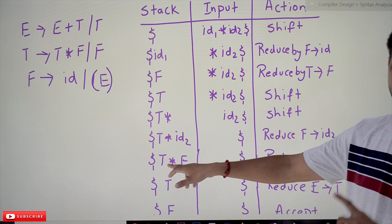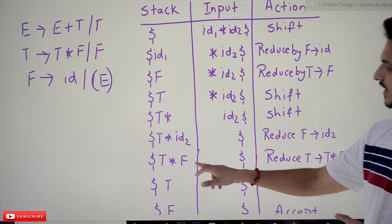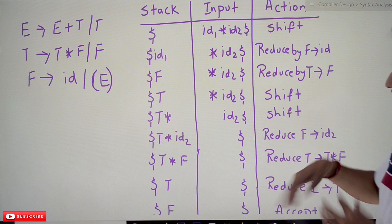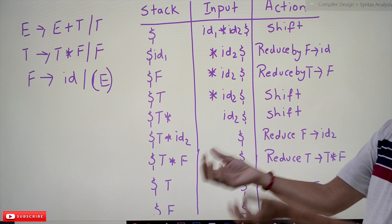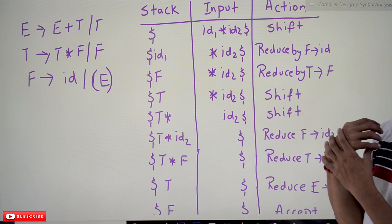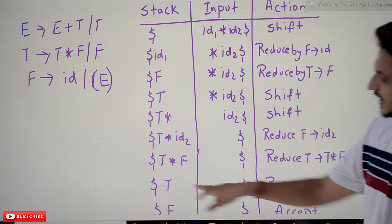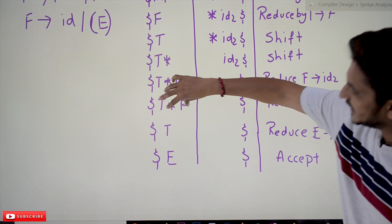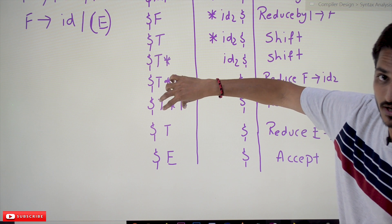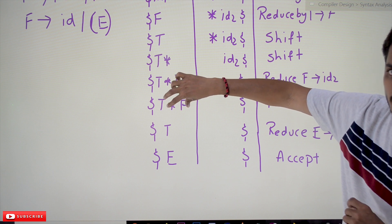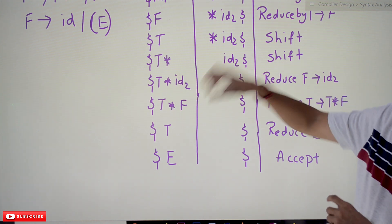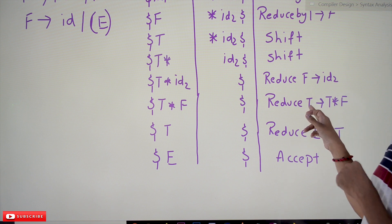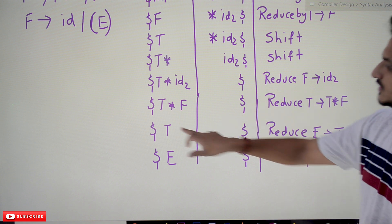Reduce: F → id matches id2, so id2 is reduced to F. Now the stack has T * F. T * F is matched by the production T → T * F, so pop T * F from the stack and push T onto the stack. That is what reduce operation means — the entire handle is matched to the body of the production, so those elements are popped and the left-hand side symbol is pushed.